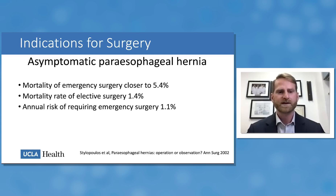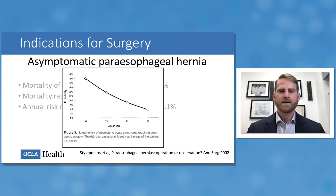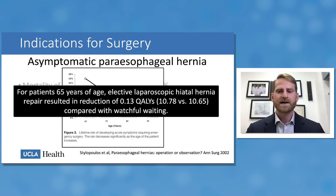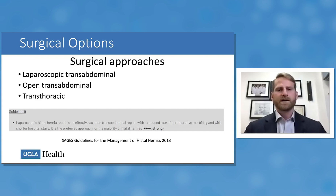The decision model estimated emergency surgery mortality at approximately 5%, elective surgery mortality at 1.4%, and annual risk of requiring emergency surgery at 1.1%. Using the 1.1% annual risk and average life expectancy, the lifetime risk of emergency surgery drops dramatically after age 65. For patients at age 65, elective laparoscopic hiatal hernia repair resulted in essentially a net-even quality-adjusted life year expectancy compared to watchful waiting. Conclusion: for patients older than 65 or poor surgical candidates, watchful waiting is reasonable; for younger healthier patients, repair of asymptomatic paraesophageal hernias is still indicated.